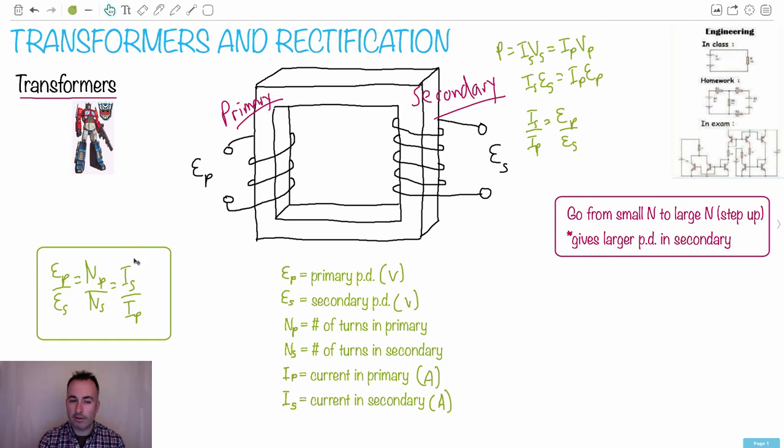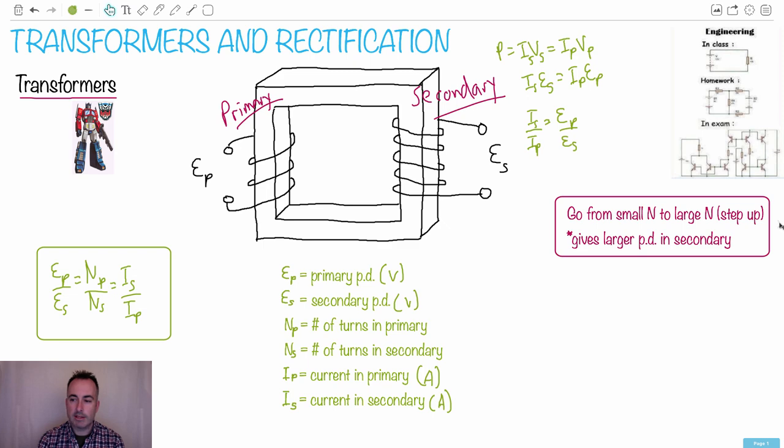The harder part of transformers is this thing we call rectification. That's why I wrote down AC is fine and all, but what if you want a DC signal? In other words, right now we've got the alternating current, which goes up and down and up and down. But what if you're hoping to power something that needs a direct current, like a nice, smooth, constant current or potential difference? Then you're in trouble. You see how this is not good.